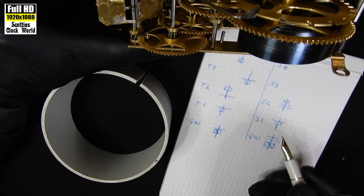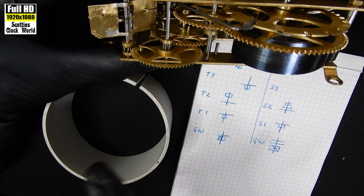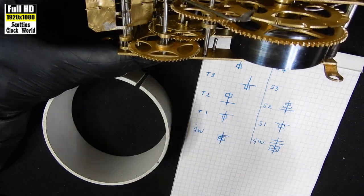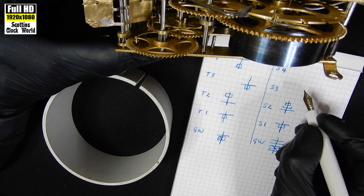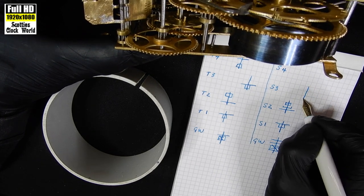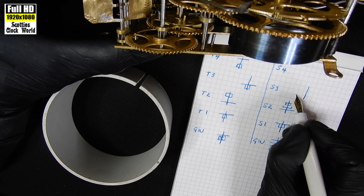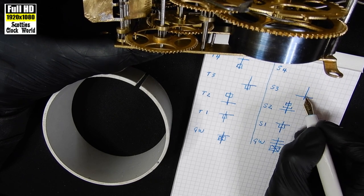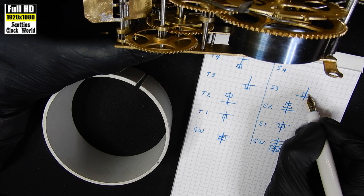Next wheel. Third wheel, S3. This one here, the warning wheel. We draw our arbor. And our wheel is down at the bottom. The pinion sits there.